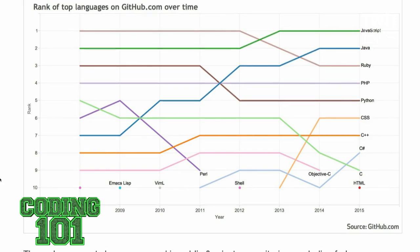We also see that JavaScript has been relatively stable. You may not expect that — it started at second in 2008 and stayed there for about four years before it jumped to first in 2013. So the most popular language on GitHub right now is JavaScript, go figure.